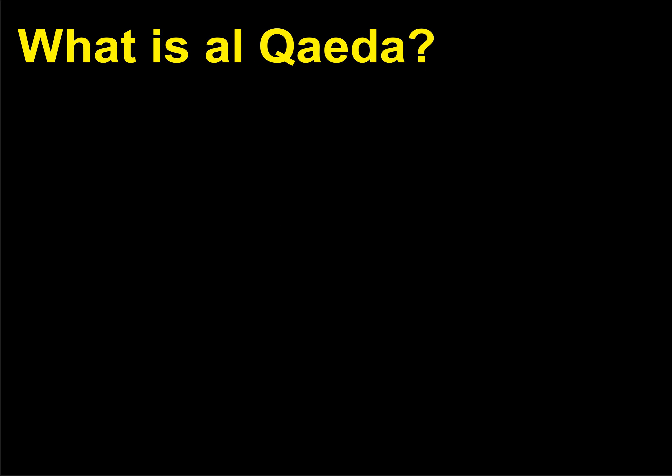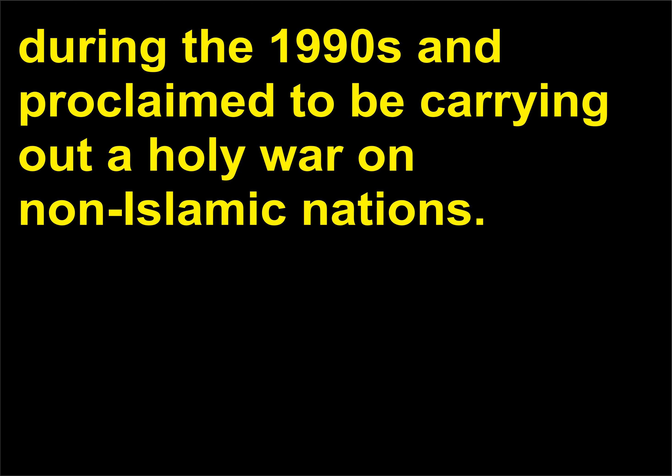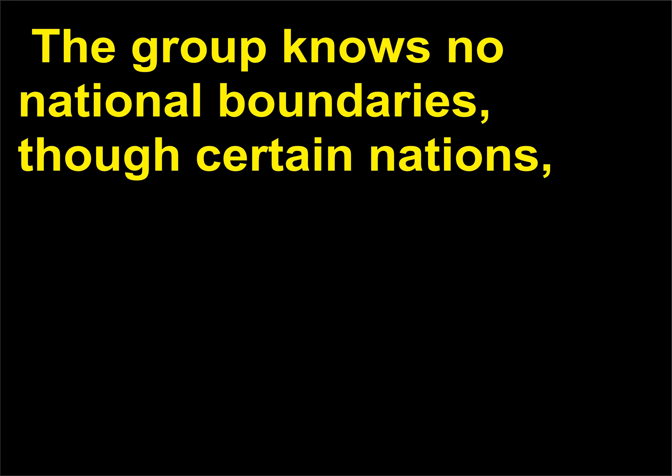What is Al-Qaeda? Al-Qaeda, Arabic meaning 'the base,' is a global network of terrorists who banded together during the 1990s and proclaimed to be carrying out a holy war on non-Islamic nations. The group knows no national boundaries, though certain nations — including Afghanistan — were known to be Al-Qaeda strongholds. Led by the elusive Osama bin Laden, a wealthy exiled Saudi, the group conducted terrorist training programs in several Muslim, mostly Middle Eastern, countries and was funded by loyalists around the world.